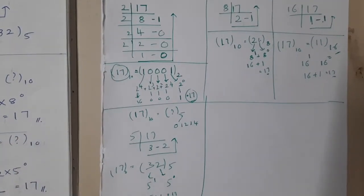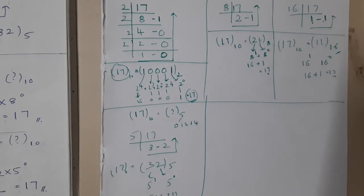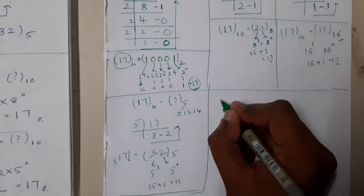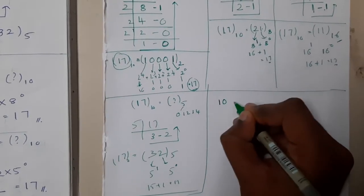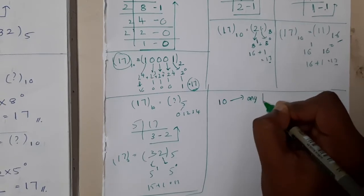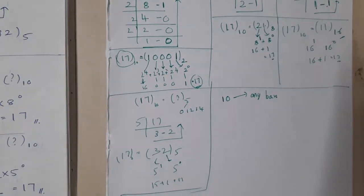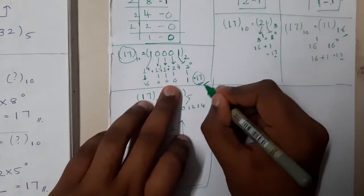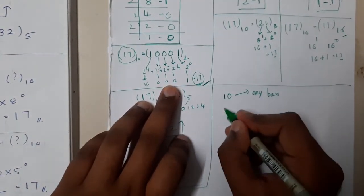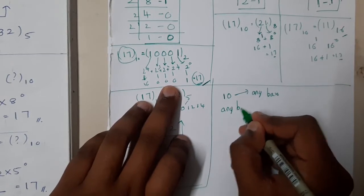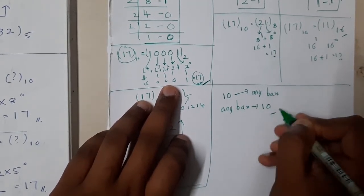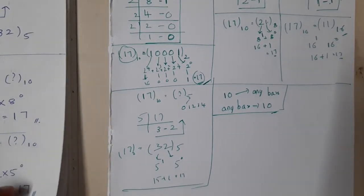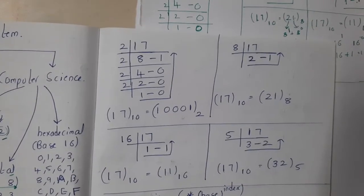To summarize what we've learned: we can convert a base 10 number into any base. We also learned the reverse — from any base back to base 10 — by multiplying each digit by its corresponding power of that base and summing. These two conversions were covered in just a few minutes.